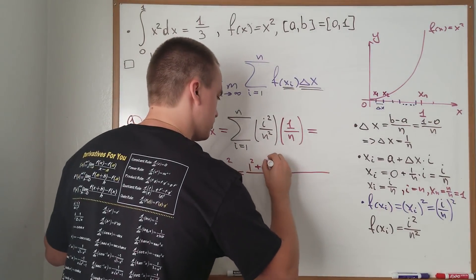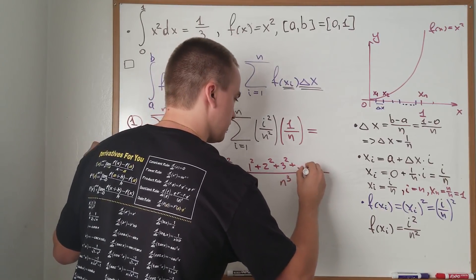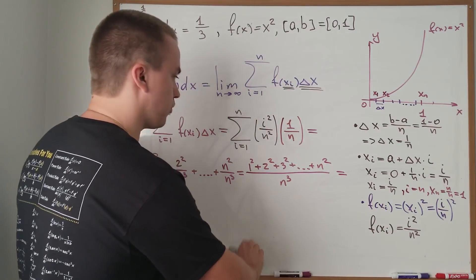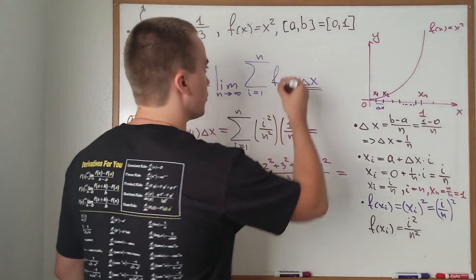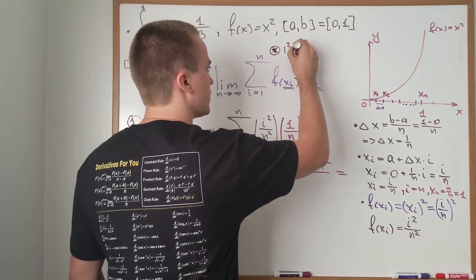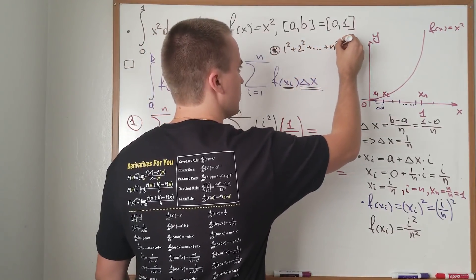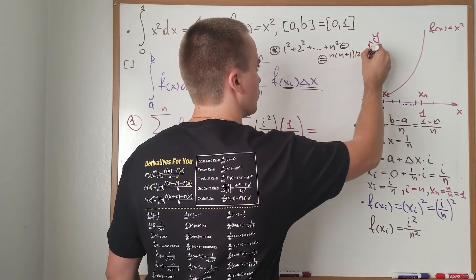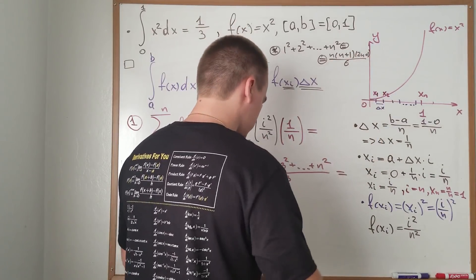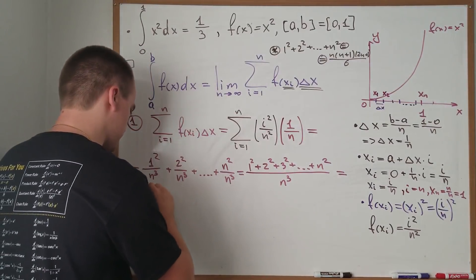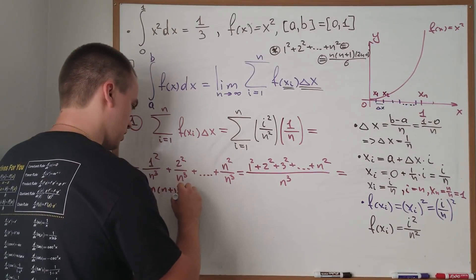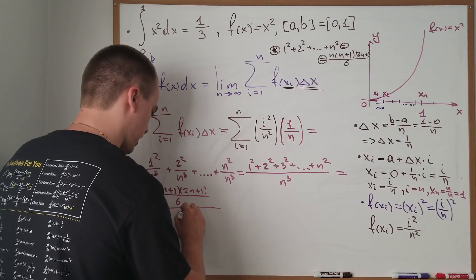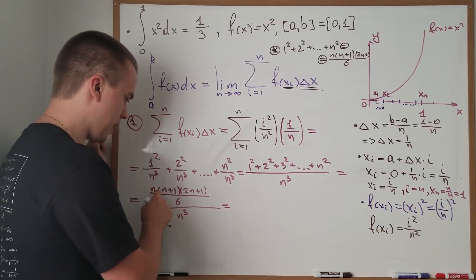Now I apply the sum of squares formula: 1² + 2² + ⋯ + n² = n(n+1)(2n+1)/6. So the entire numerator can be rewritten as n(n+1)(2n+1)/6, all over n³. Moving 6 to the denominator gives 6n³ in the bottom, and I factor each n out to get n·(1 + 1/n)·(2 + 1/n) in the numerator.